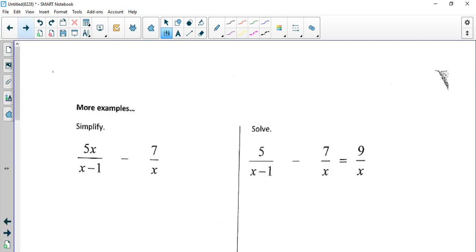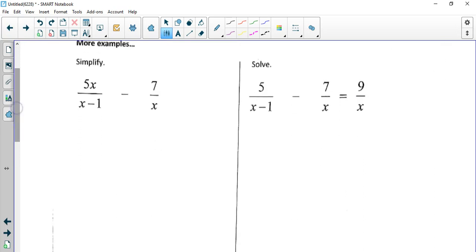Let's do a few. So LCD is x times x minus 1. This one just needs the x. This one needs the x minus 1. And remember I'm going to make this plus and make that negative 7. I'm going to distribute the negative 7, so 5x squared minus 7x plus 7. Nothing to combine, so I'm done.